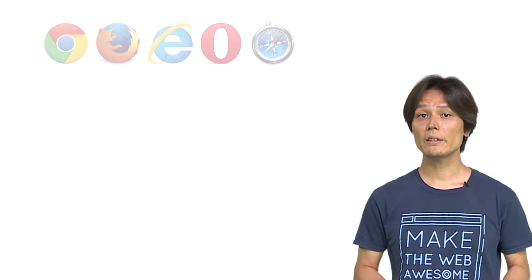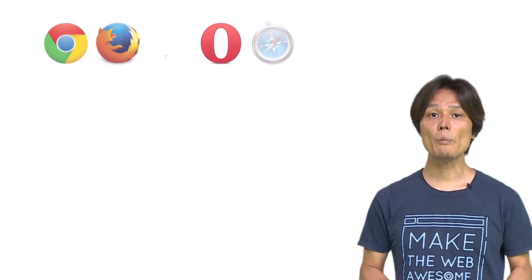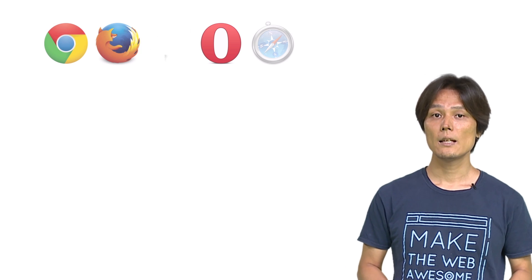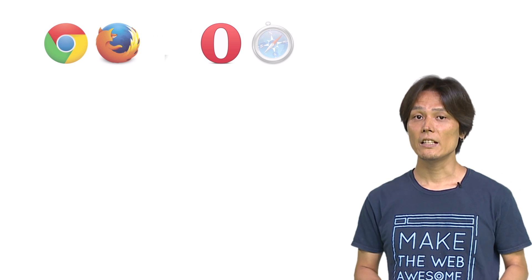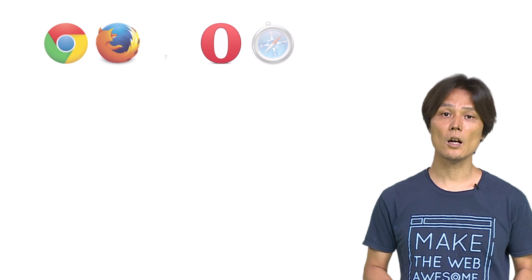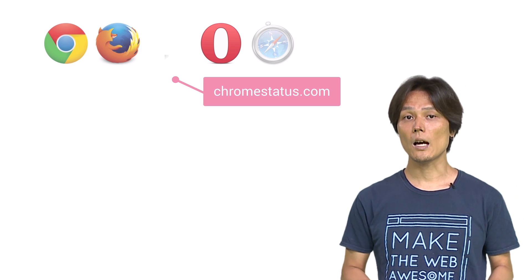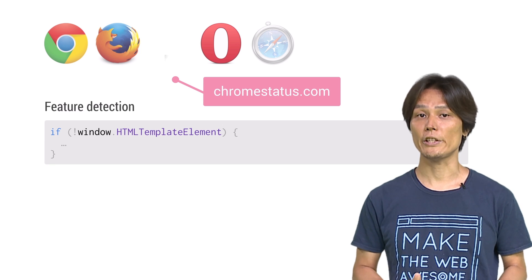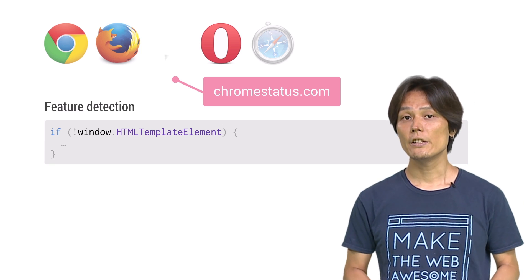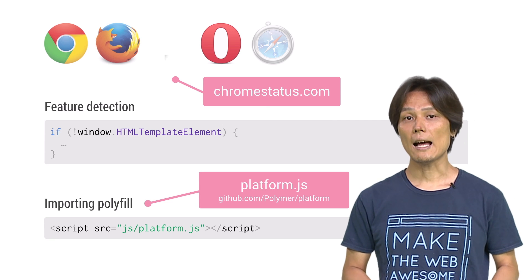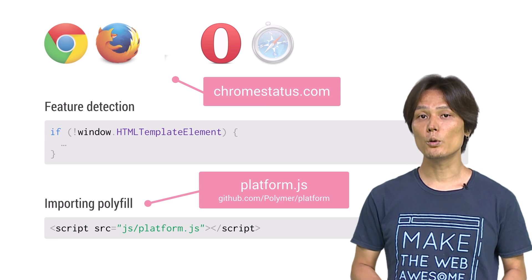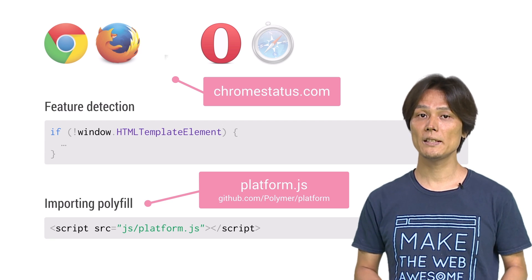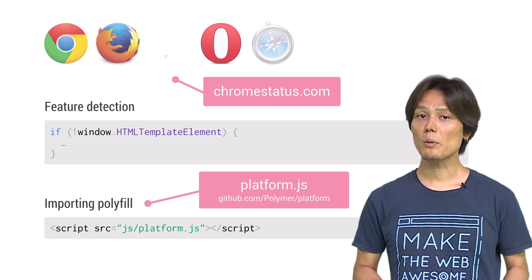Currently, the template element is supported in Chrome, Firefox, and Opera. Safari is expected to support it in version 8, but things change frequently, so check in on ChromeStatus.com. To detect availability of the template tag, check if the HTML template element is available under the window object. For unsupported browsers, you can use platform.js, a collection of web components polyfills made available as part of the Polymer library, which will automatically detect the availability of the template element and polyfill it if necessary.